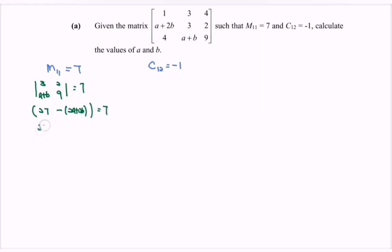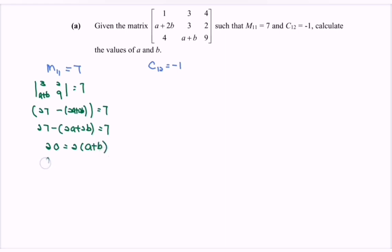So, 27 minus bracket 2A plus 2B equals to 7. Rearranging, we have 20 equals to 2 bracket A plus B. So A plus B equals to 10. That is the first equation.